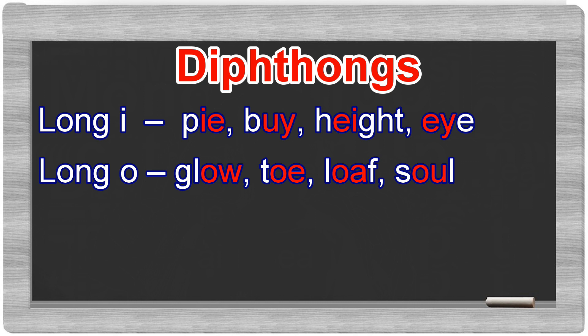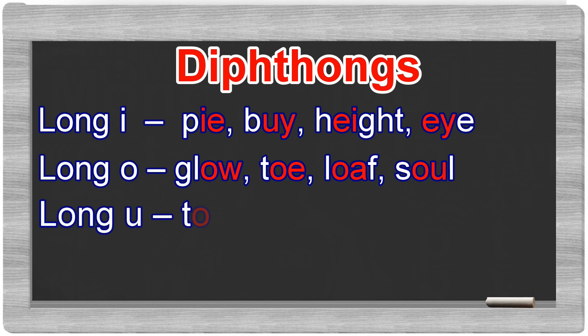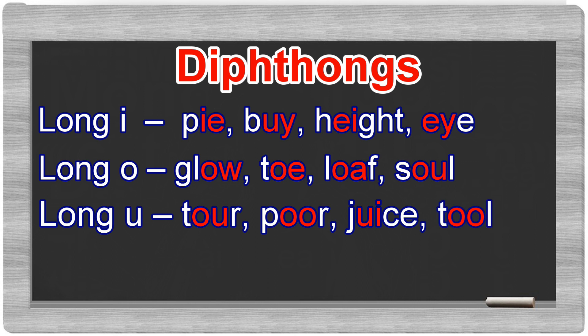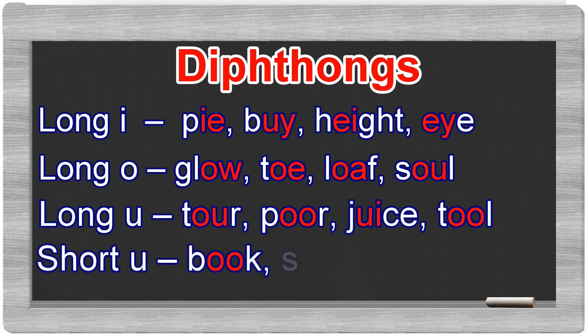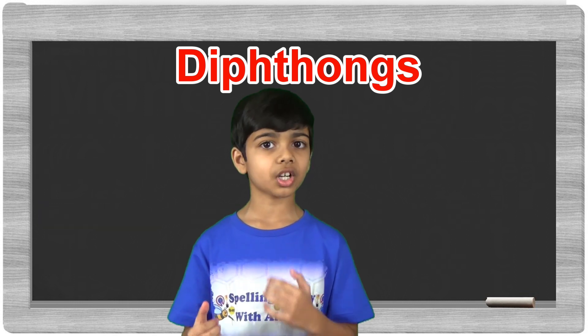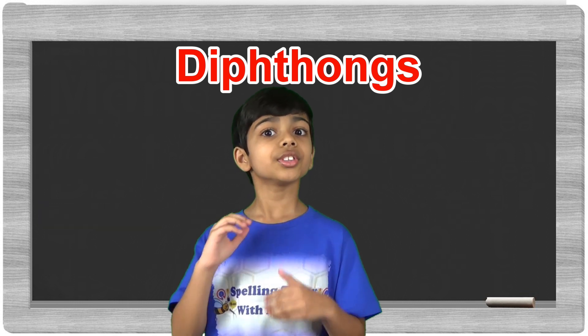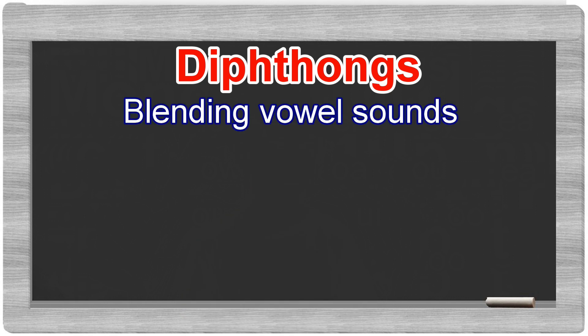For the long U sound, there's tour, pour, juice, and tool. And finally for the short U sound, there's book, should, and would. These are some examples of diphthongs with blending vowel sounds.